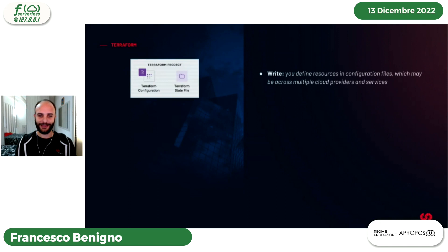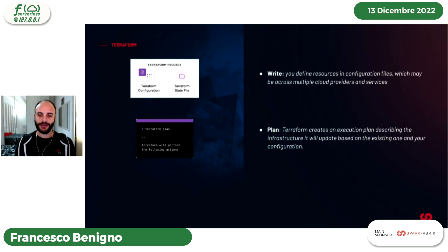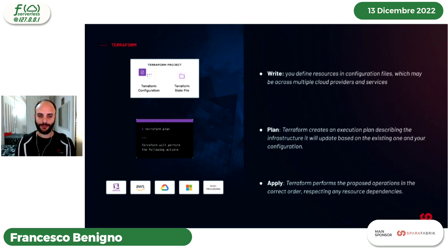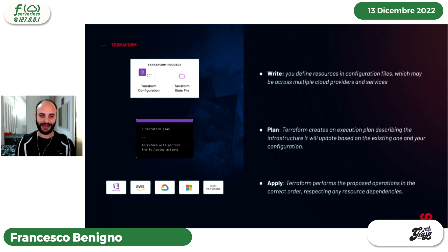I passaggi fondamentali di Terraform sono tre. Prima si scrivono i file di configurazione descrivendo le risorse, che possono fare riferimento anche a più cloud provider. Poi si usa il comando plan che, dato lo stato attuale, descrive le azioni che verranno effettuate sull'infrastruttura cloud. Se il piano è coerente, si lancia il comando apply, che applica le azioni — creazione, modifica o cancellazione di risorse — rispettando l'ordine e le dipendenze tra i moduli.